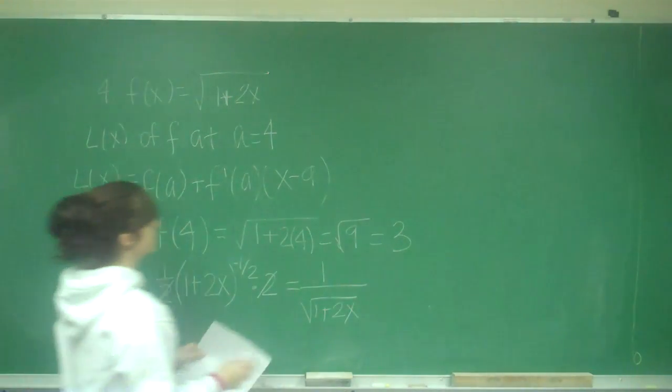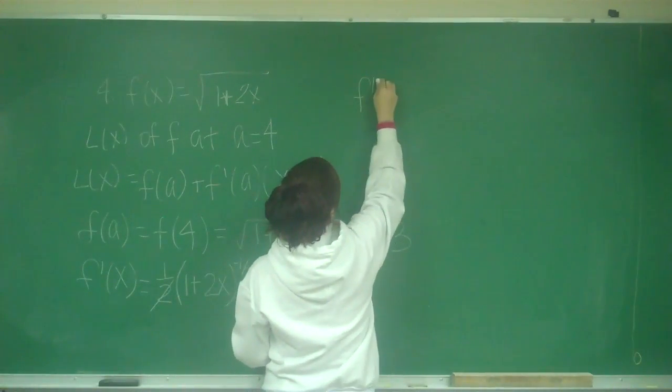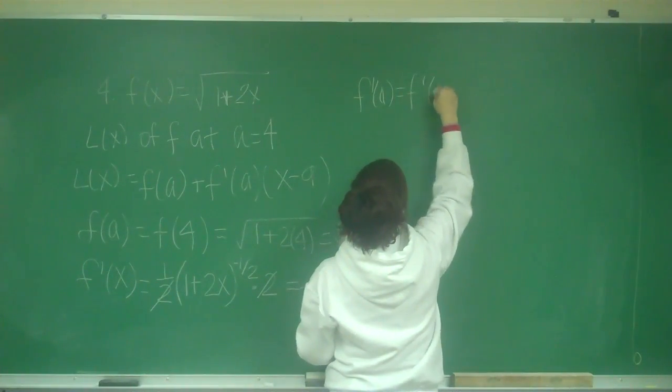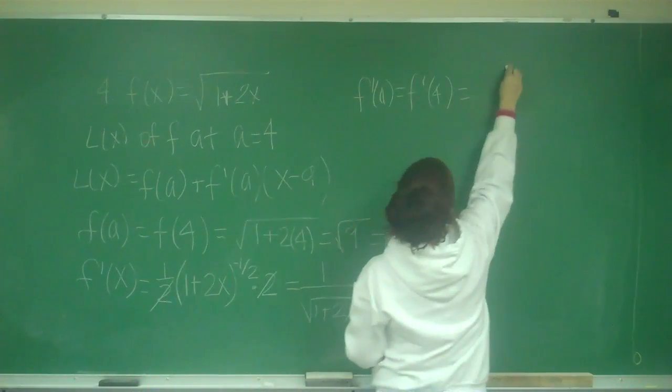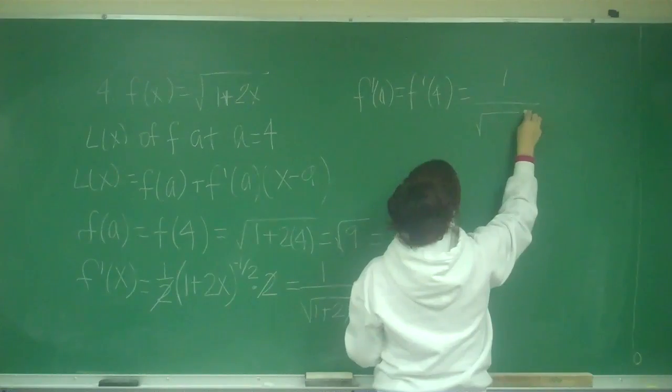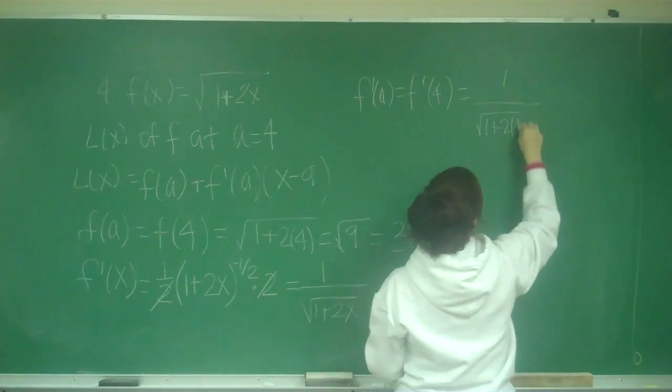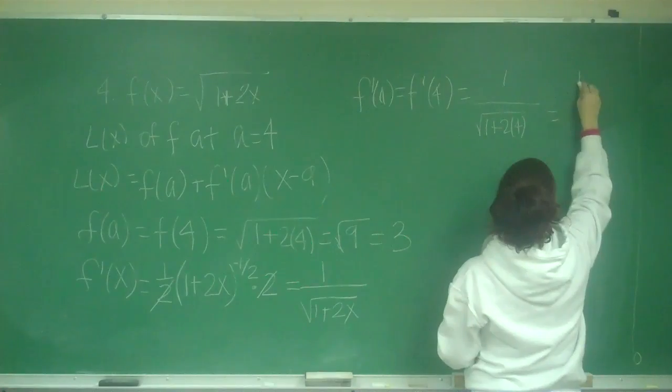So we have our formula. So f'(a) equals f'(4), which equals 1 over the square root of 1 plus 2 times 4. So that's going to be 1/3.